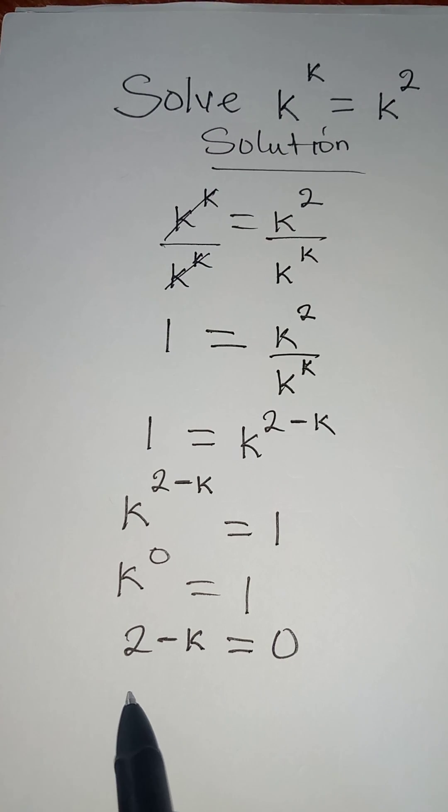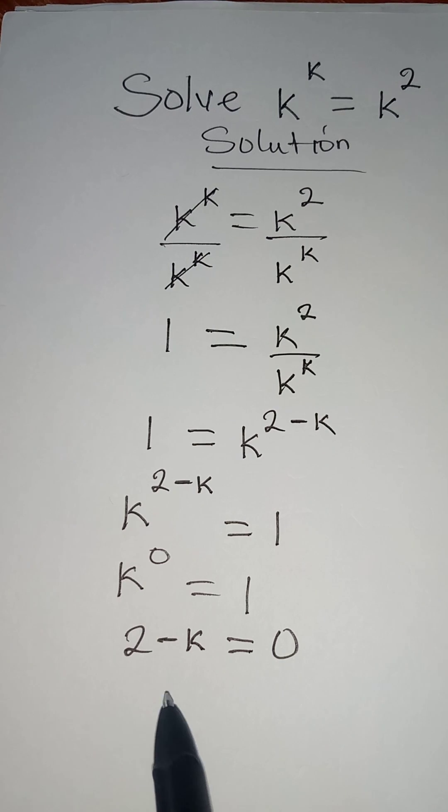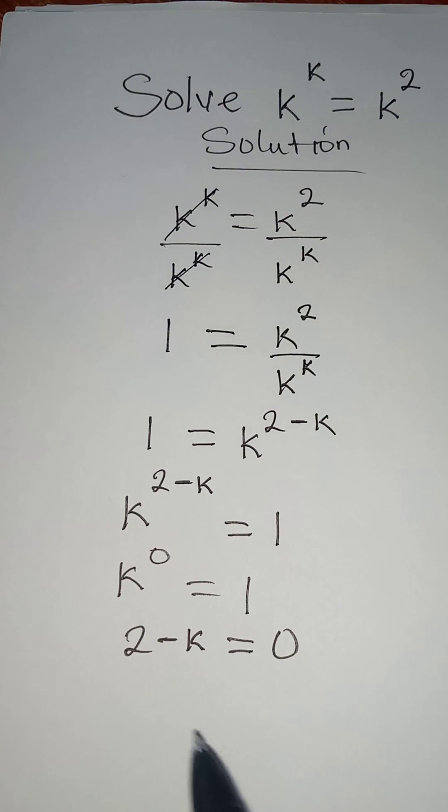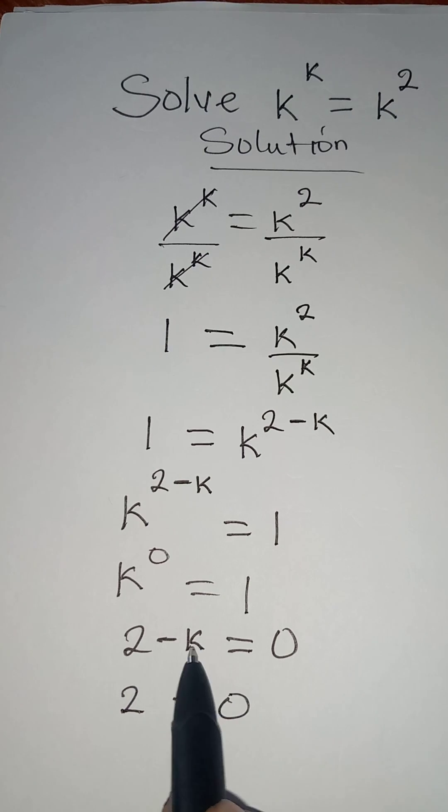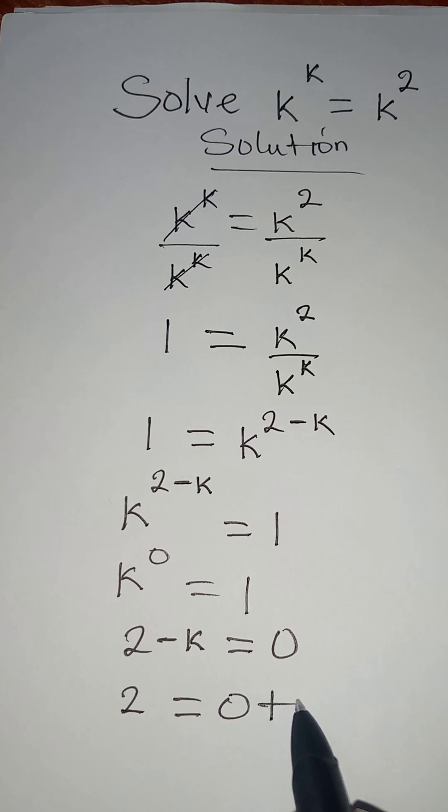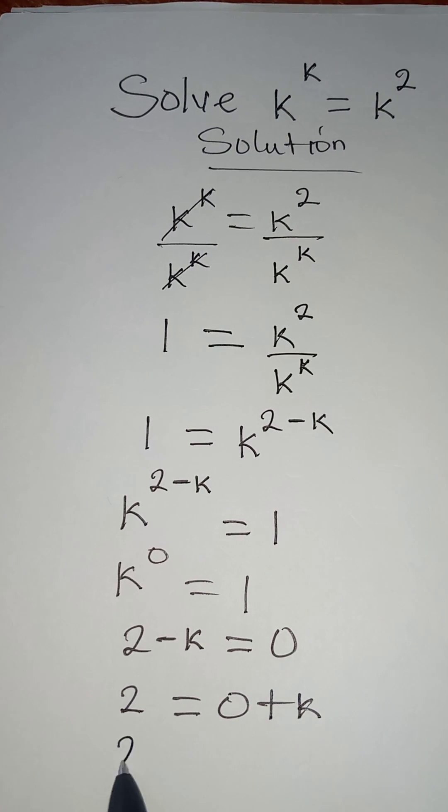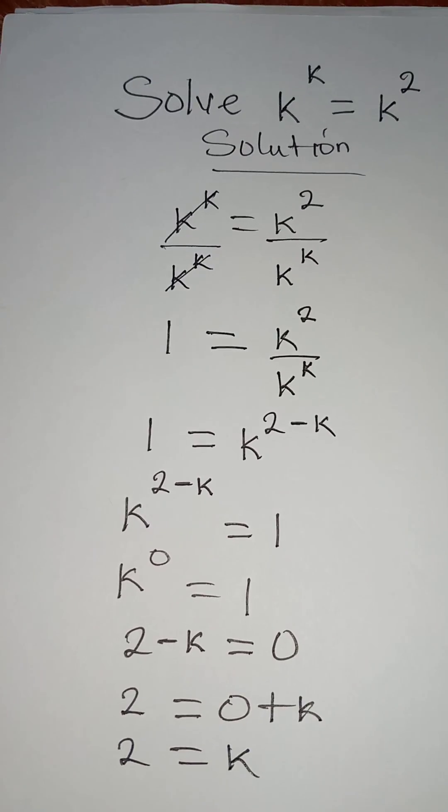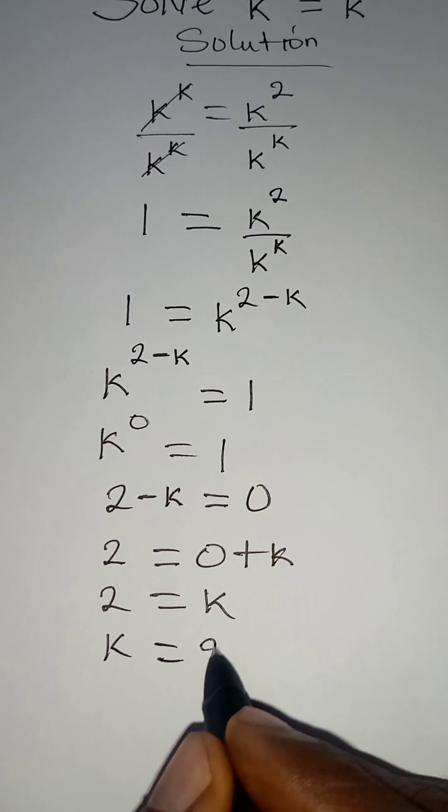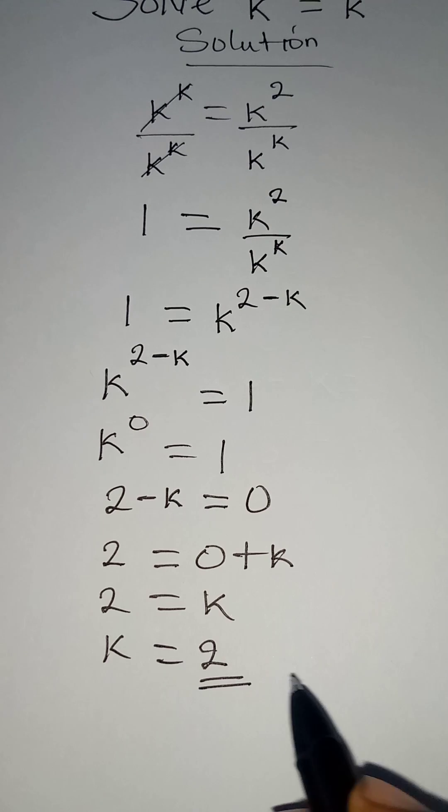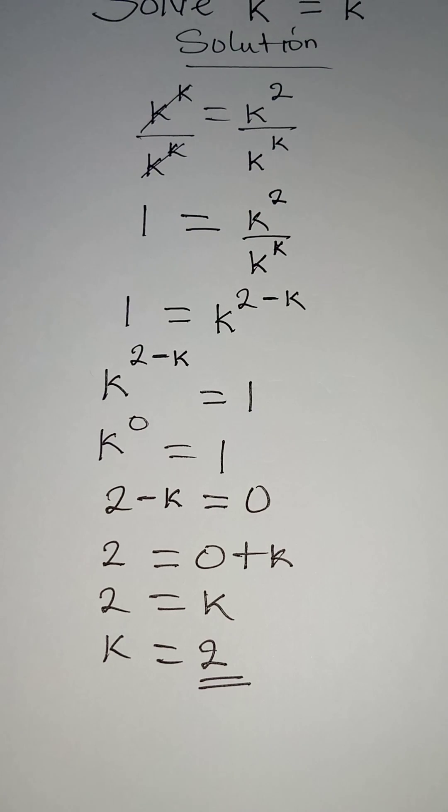And then from here, let's collect like terms or take minus k to the other side. So 2 will be equal to 0. Now this minus k becomes plus k. And this means that 2 is equal to k. And it also means that k is equal to 2. So this is the value of k that satisfies the equation.